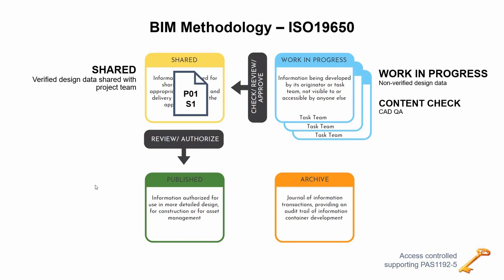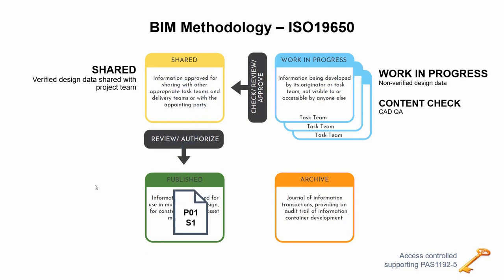We can revise the document from shared and ProjectWise will increase the major revision. In this case, we will go to P02 and again the process starts over. From shared, the next stage is published, at which point it's a contractual document. And finally, we might use an archived stage once the project is finished.